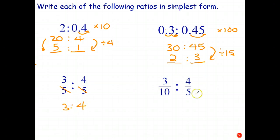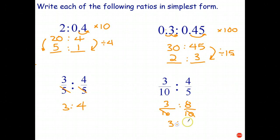For the last one I need a common denominator of 10. One fraction already has a denominator of 10, so nothing needs to be done to it. For the other, I multiply top and bottom by 2, giving 8 tenths. The denominators are now the same, so the simplified ratio is 3 is to 8. With a bit of practice, simplifying ratios involving decimals and fractions isn't all that hard.